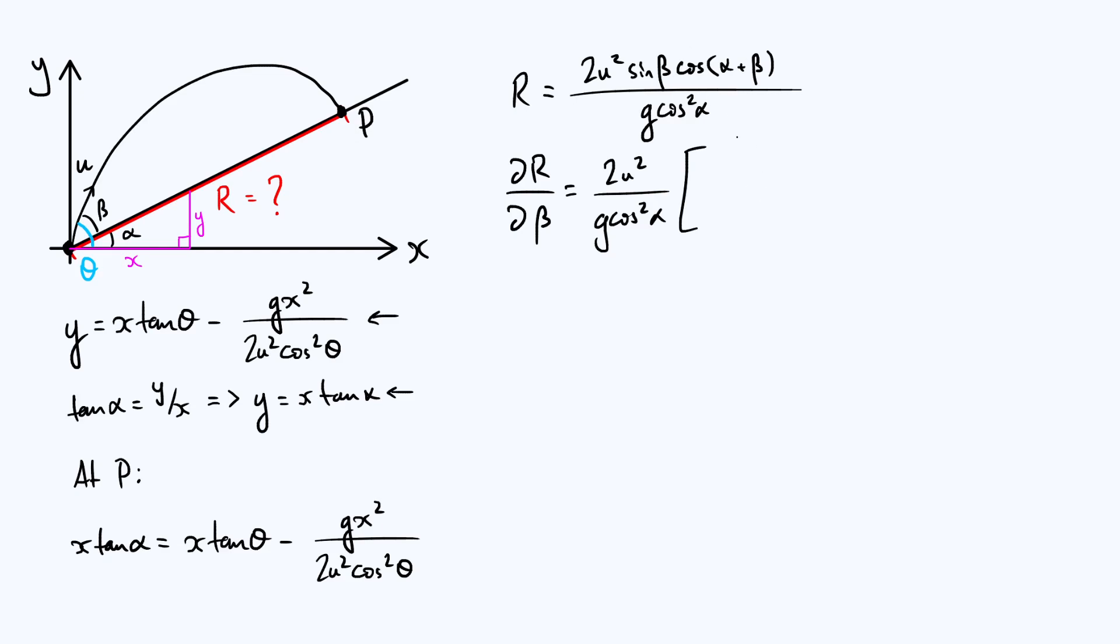Now we're going to have to use the product rule on the top. We differentiate sine beta with respect to beta, you get cos beta, and then you keep your cos of alpha plus beta as it is. Then you do it the other way around. So you keep the sine beta as it is and you differentiate the cos term, but cos differentiates to minus sine, and so we're going to have minus sine of beta times sine of alpha plus beta, and close those brackets.